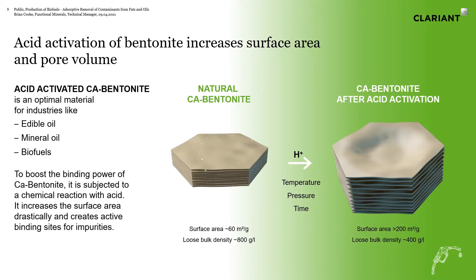If you just dug the clay out of the ground and processed it as-is, you'd have a surface area of about 60 square meters per gram and a bulk density of about 800 grams per liter. To increase that surface area, the clay is subjected to acid with temperature, pressure, and time to form what we call an acid-activated bleaching earth. That increases the surface area to about 200 square meters per gram or higher, and also reduces the bulk density. These products have been used for many years in the edible oil, mineral oil, and biofuel industries.